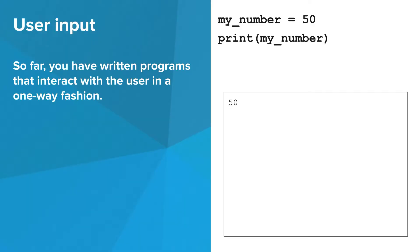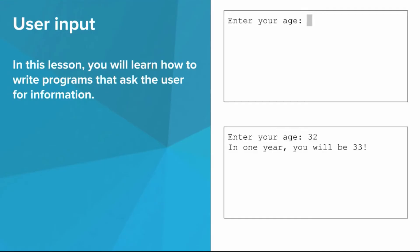So far, you've written programs that interact with the user in a one-way fashion. Your program does something, it prints something, end of story. In this lesson, you'll learn how to write programs that ask the user for information.